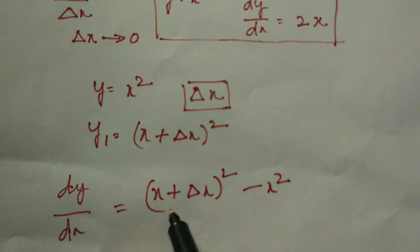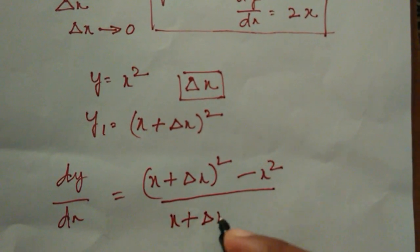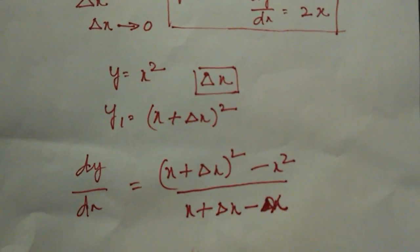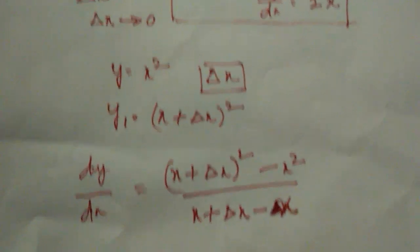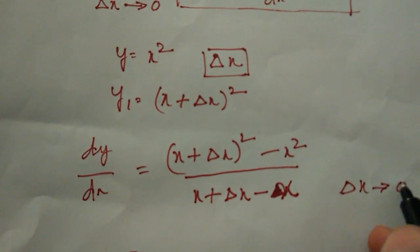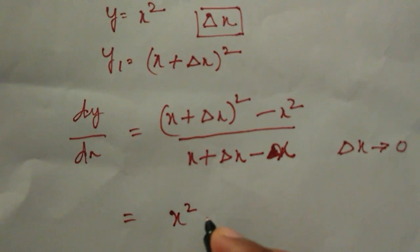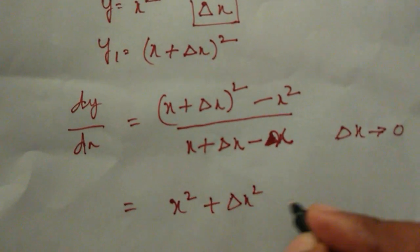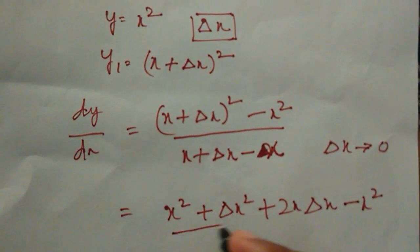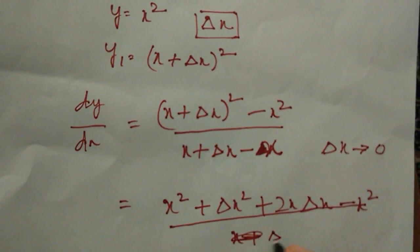So change in y — that is y1 minus y — by change in x — that is x plus delta x minus x. Again, delta x is tending to 0, it is almost very very small, infinitesimal. You can write this as x square plus delta x square plus 2x delta x minus x square, divided by delta x.